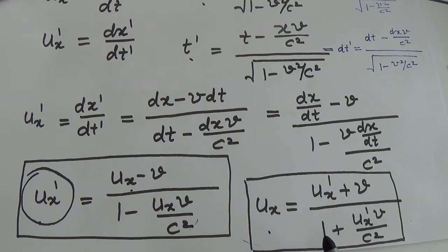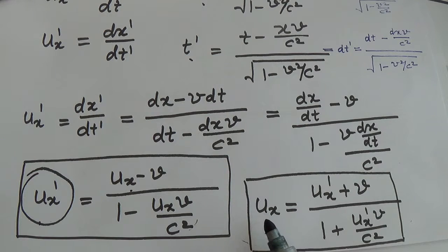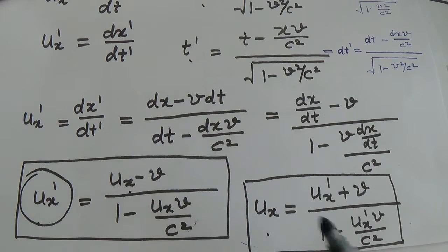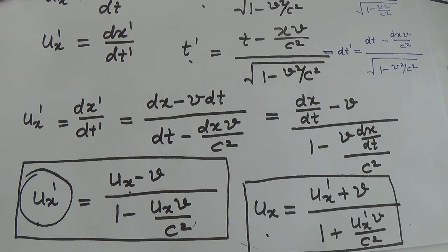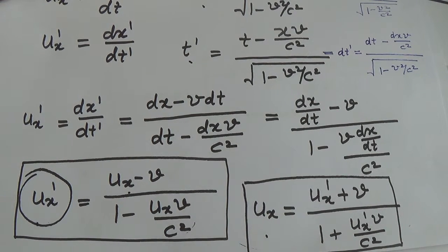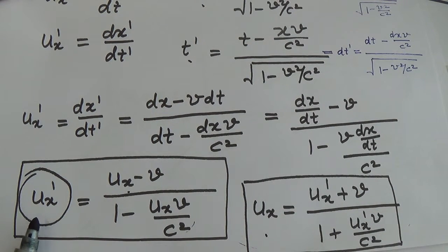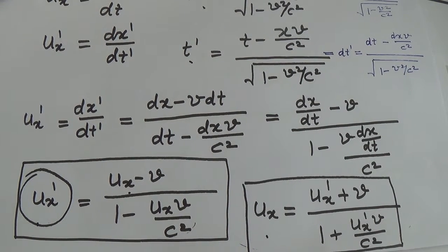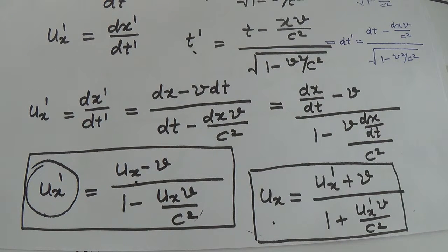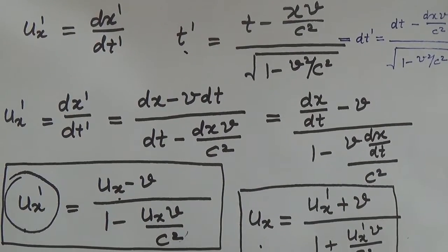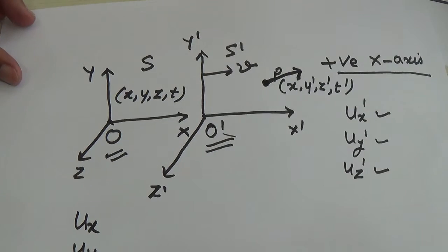So if one has to find out ux, don't put the values of ux prime and v into the formula for ux prime. Make it clear: if you have to find out ux, use the formula ux equals ux prime plus v upon 1 plus ux prime·v upon c squared. And if you have to find out ux prime, use the formula ux prime equals ux minus v upon 1 minus ux·v upon c squared. These formulas are derived keeping in mind the relative speed of the object and observer.